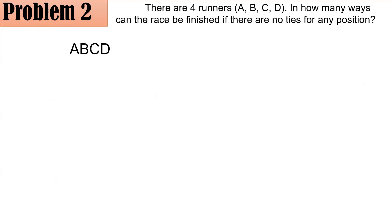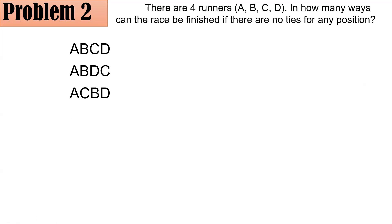So if A is the first place — reading from left to right — we have first place, second place, third place, and fourth place. You could also have A as first placer, B as second placer, D as third placer, and C as fourth placer. Take note that in this case, order matters. Because the moment you have two people with different ranks, that is entirely a different arrangement.